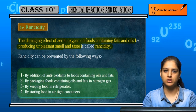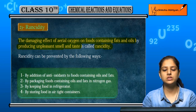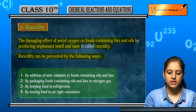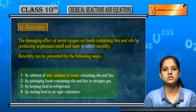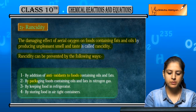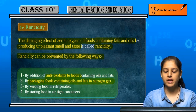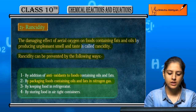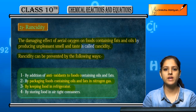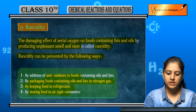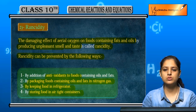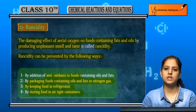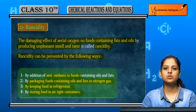Oxidation is responsible for rancidity. To prevent rancidity, we can use antioxidants, counter it with nitrogen gas, keep food in refrigerators, or store food in airtight containers — airtight containers air ko andar jaane se rokenge. So we can prevent rancidity using these methods. These were two phenomena which occur due to oxidation in everyday life.